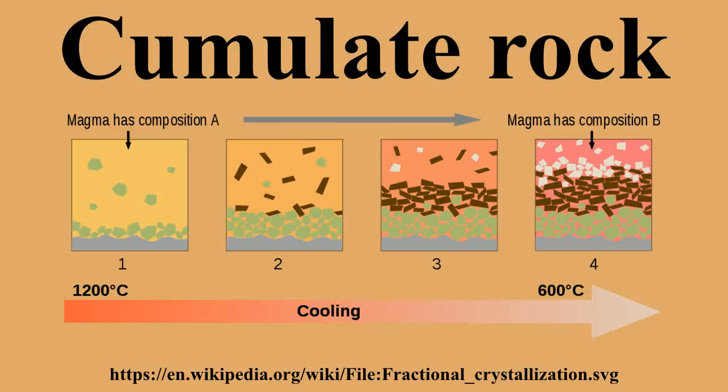The plagioclase and pyroxene need not be pure end-member compositions, and thus the effect of depletion of elements can be complex. The minerals can be precipitated in any ratio within the cumulate — such cumulates can be 90% plagioclase and 10% enstatite, through to 10% plagioclase and 90% enstatite, and remain a gabbro. This also alters the chemistry of the cumulate and the depletions of the residual melt.